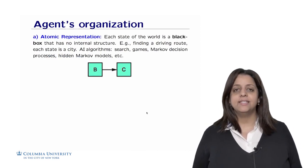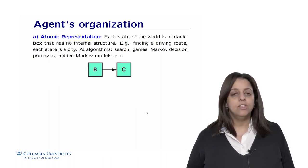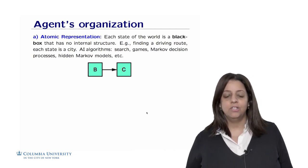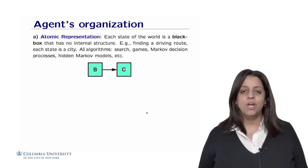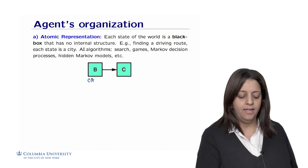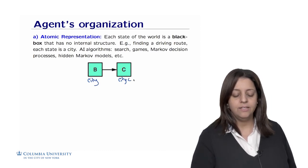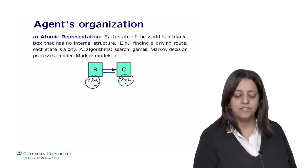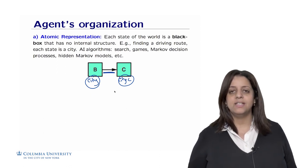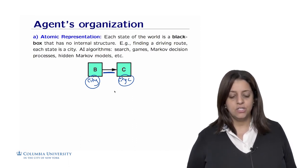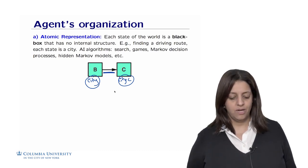Agent internal states can be represented in different ways. In atomic representation, each state of the world is a black box with no internal structure. For example, in finding a driving route, each city constitutes a state — we want to find the route between two cities and don't care about the internal structure of intermediate cities. AI algorithms leveraging this kind of representation include search, games, Markov decision processes, and hidden Markov models.